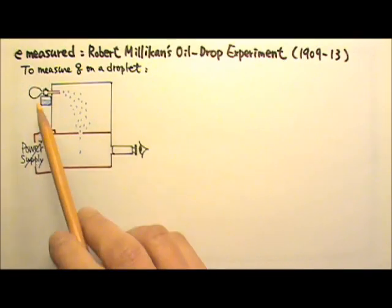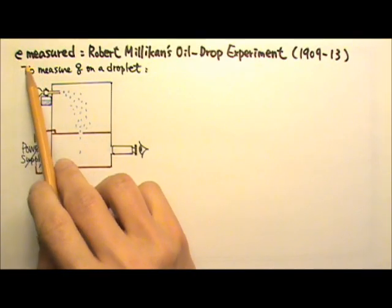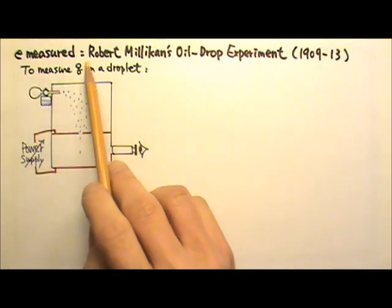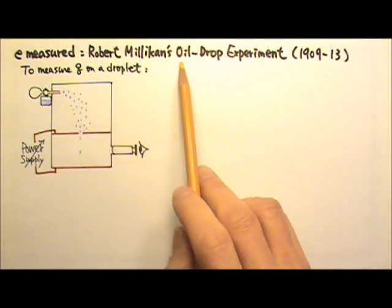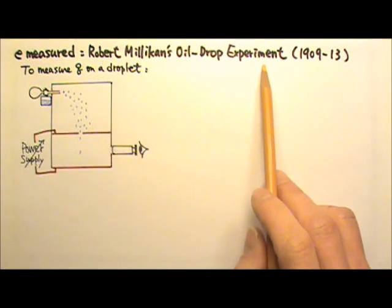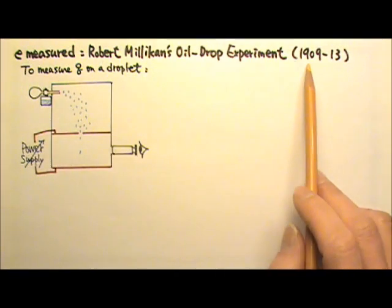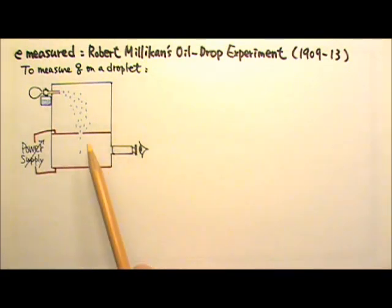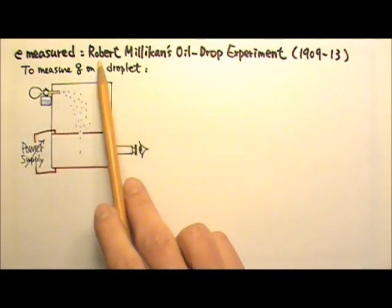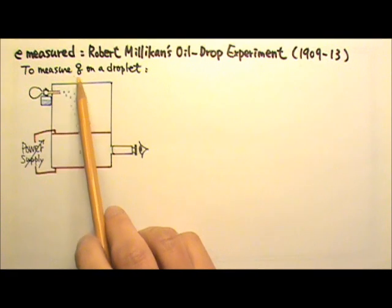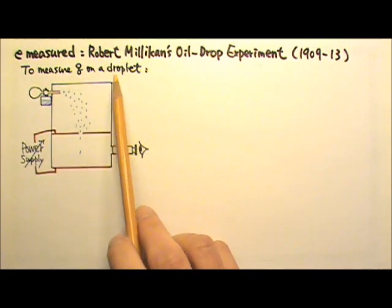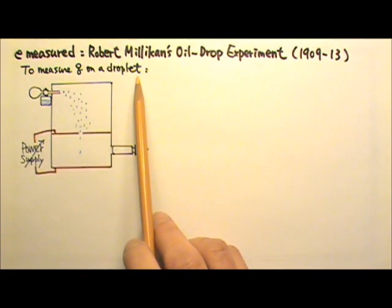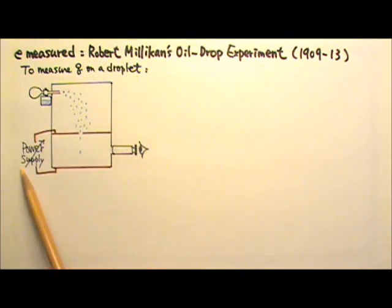The measurement of the elementary charge was done by Robert Millikan's oil drop experiment at the University of Chicago in 1909 to 1913. His apparatus used to measure the amount of charge an oil droplet carries is like this.